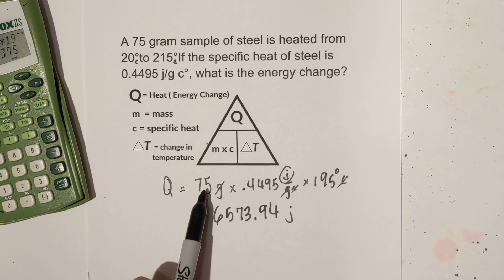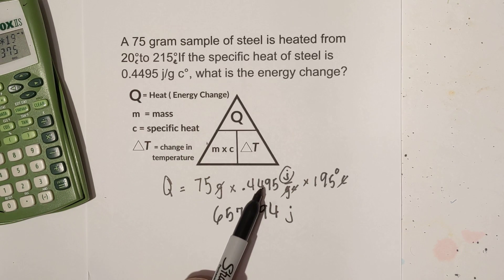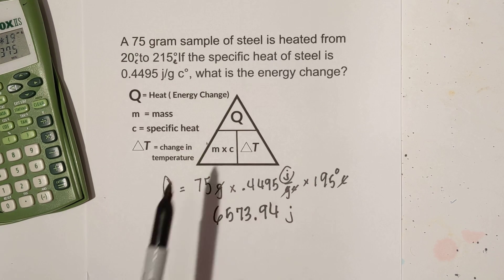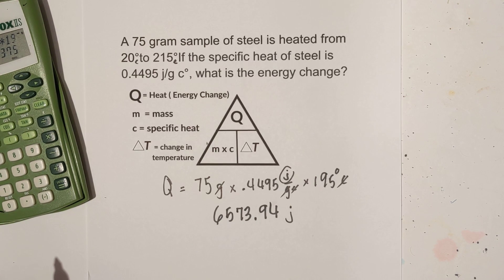So in summary all we did was we just multiplied the mass times the specific heat times the change in temperature. 6573.94 joules.